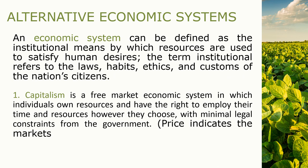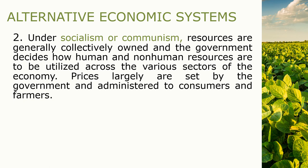We also need to discuss alternative economic systems. An economic system can be defined as the institutional means by which resources are used to satisfy human desires. The term institutional refers to the laws, habits, ethics, and customs of a nation's citizens. One example is capitalism — a free market economy in which individuals own resources and have the right to employ their time and resources, under minimal legal constraint from the government, with price serving as an indicator in the market. Next is socialism or communism, wherein resources are generally collectively owned and the government decides how human and non-human resources are utilized across the various sectors of the economy, with prices largely set by the government.